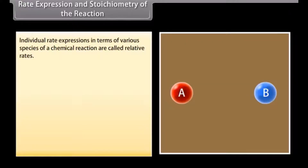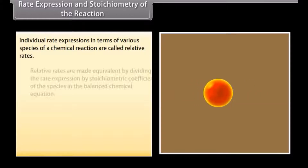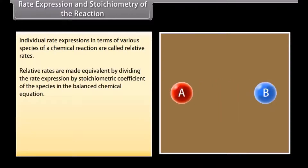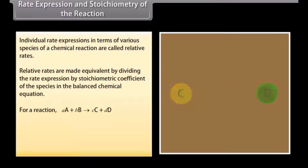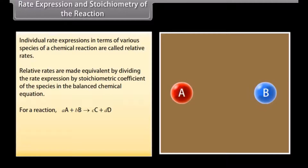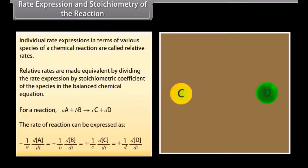Rate expression and stoichiometry of the reaction. Individual rate expressions in terms of various species of a chemical reaction are called relative rates. Relative rates are made equivalent by dividing the rate expression by the stoichiometric coefficient of the species in the balanced chemical equation. For a reaction: aA + bB → cC + dD, the rate of reaction can be expressed accordingly.